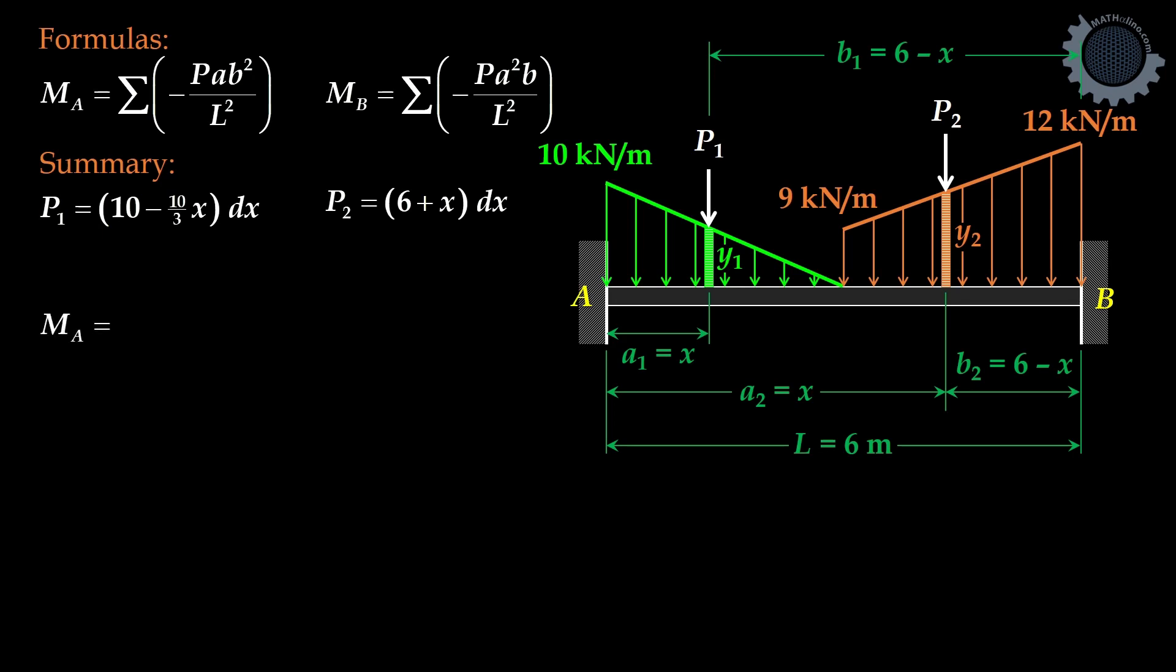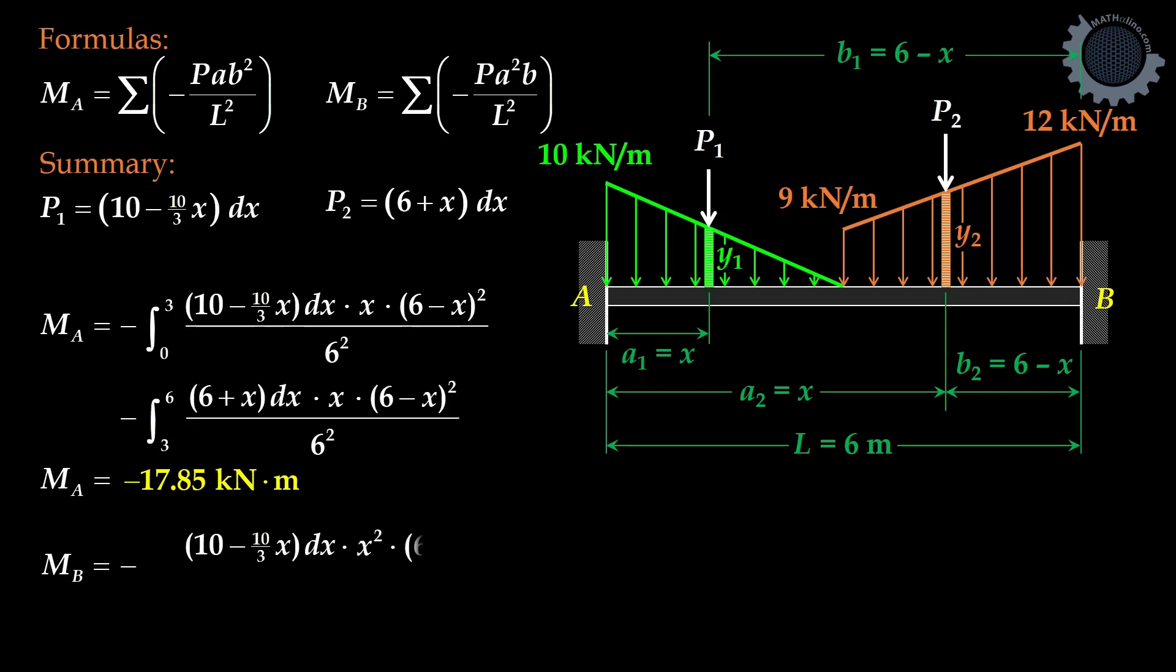Moment at A is equal to negative P1 A1 B1 squared all over L squared, sum up from 0 to 3, plus negative P2 A2 B2 squared all over L squared, sum up from 0 to 3.